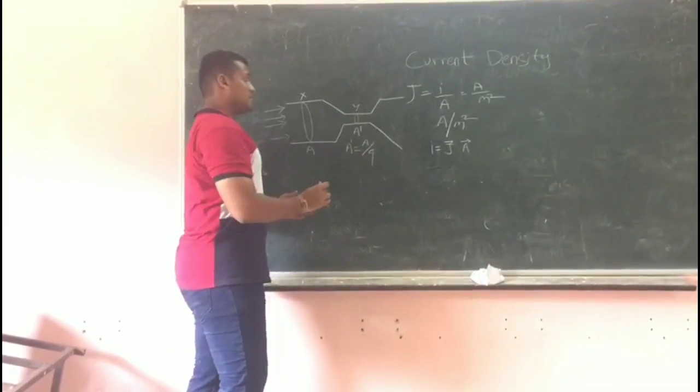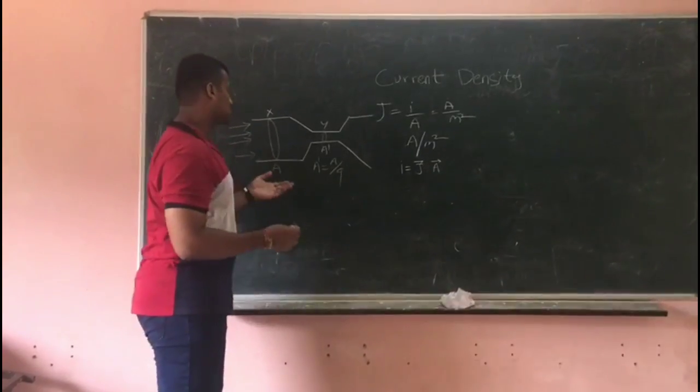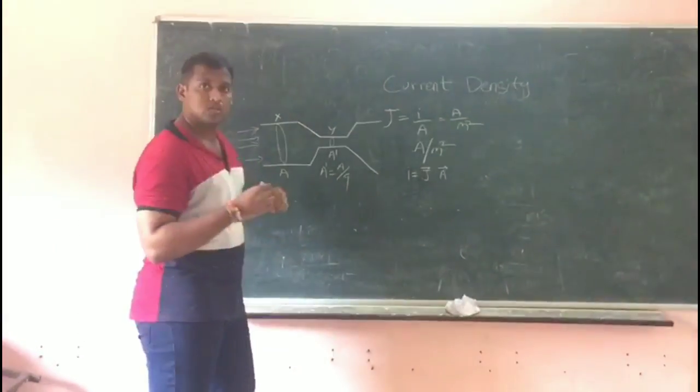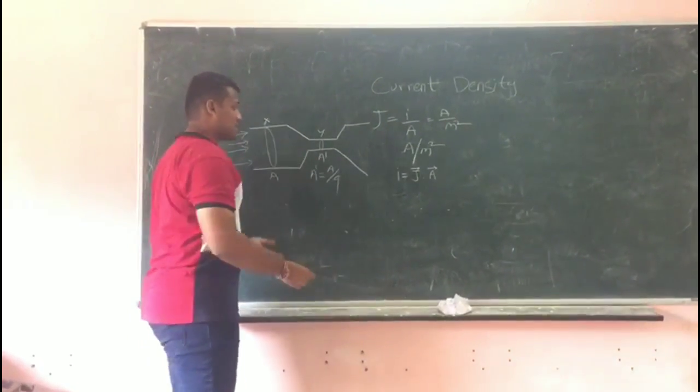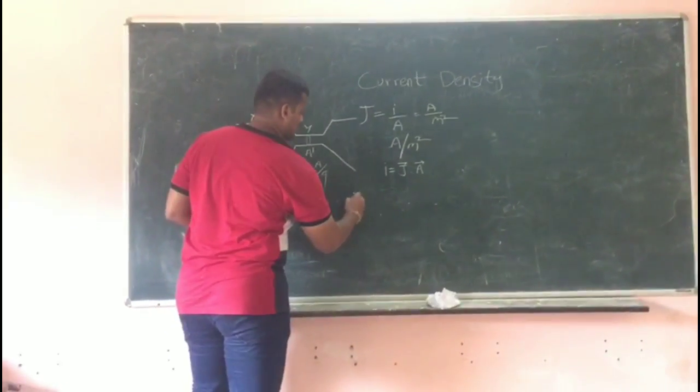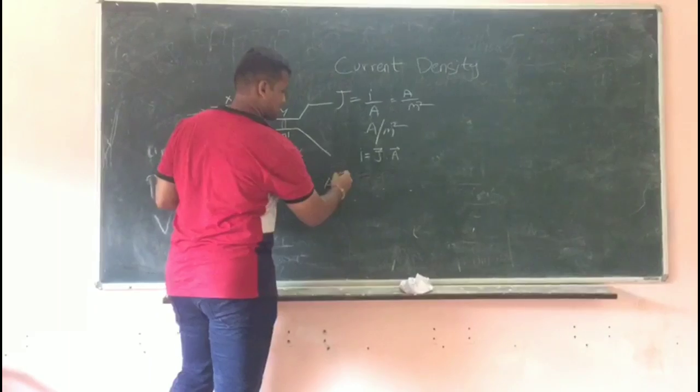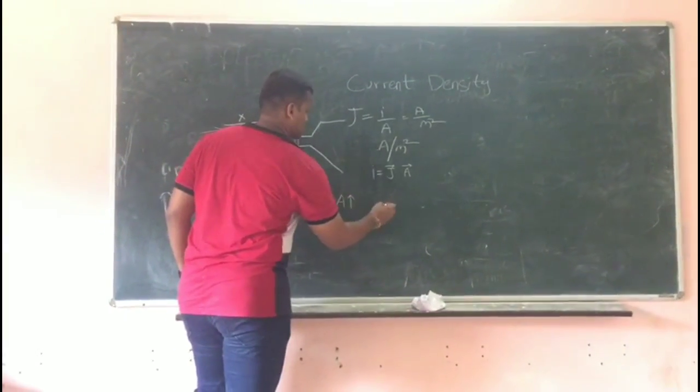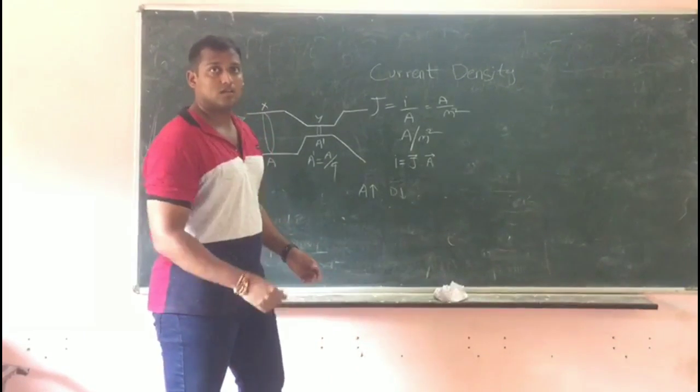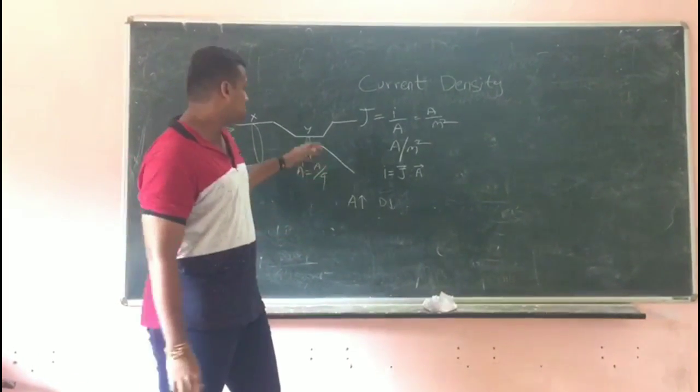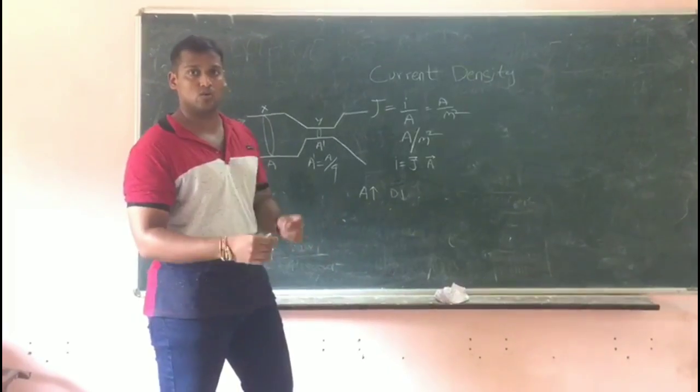We can take the cross-sectional area. When A decreases, density increases. When the density increases, the cross-sectional area will be low.